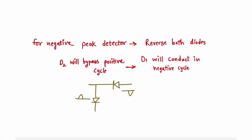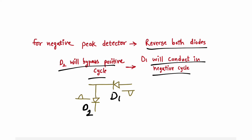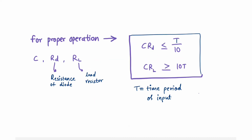Now we will see the negative peak detector. It is very simple — we just reverse the direction of both diodes. D1, which was connected in forward, is now connected in reverse, and D2 is connected in forward. So D2 bypasses the positive cycle, just like it was bypassing the negative cycle in the positive peak detector, and D1 conducts in the negative cycle — vice versa. There is nothing different in the negative peak detector other than the direction of the diodes.